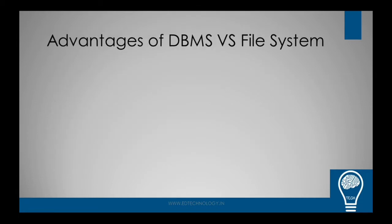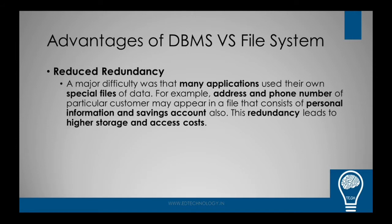What are the advantages of DBMS over the file system? First of all, it reduces redundancy. Redundancy means duplication of data — the same files existing in the system at different places, taking up a lot of space in memory. The major difficulty is that many applications use their own special files. For example, the address and phone number of a particular customer may appear in a personal information file and also in the savings account file, leading to higher storage usage, which is very costly.